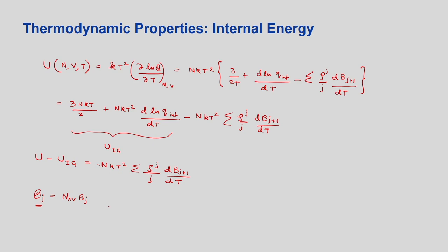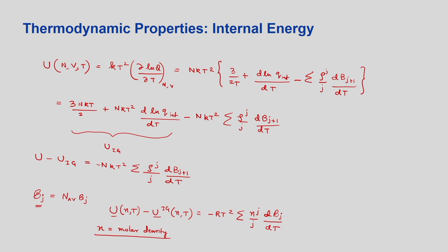An important note: B here is on a per-molecule basis. Since we treat gases on a per-mole basis, we multiply by Avogadro's number. The per-mole virial coefficient is denoted with a special symbol (italics B). Written per mole, the expression becomes: (U - U_ig) / Nt = -RT² Σ_j [η^j/j · (d B̃_(j+1)/dT)], where η is molar density.